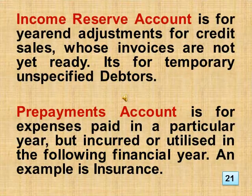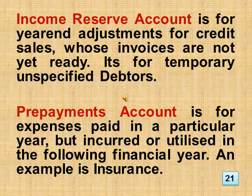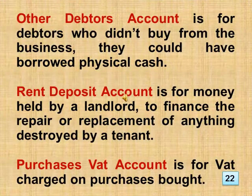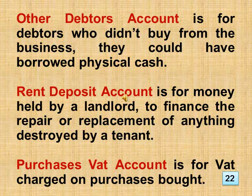Income Reserve account is for year-end adjustments for credit sales whose invoices are not yet ready — it's for temporary unspecified debtors. Prepayments Account is for expenses paid in a particular year but incurred or utilized in the following financial year; an example is insurance. Other Debtors Account is for debtors who didn't buy from the business — they could have borrowed physical cash. Rent Deposit Account is for money held by a landlord to finance the repair or replacement of anything destroyed by a tenant. Purchases VAT Account is for VAT charged on purchases bought.